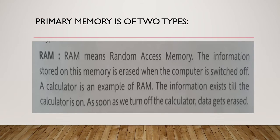Now, further, this primary memory is of two types. We have seen that memory has two parts — primary memory and secondary memory. Now this primary memory also has two parts. First is RAM. RAM means Random Access Memory.